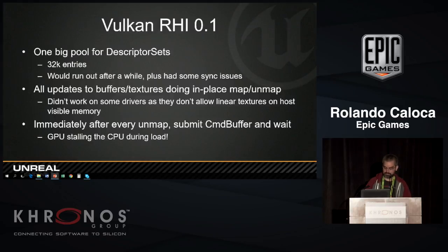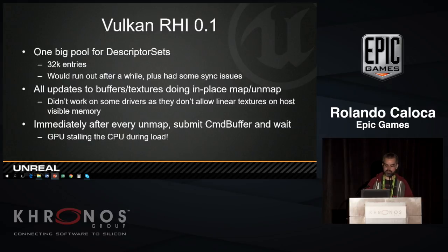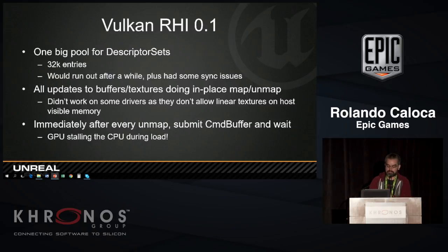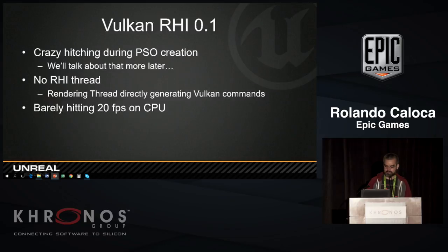Our very first version of Vulkan — our Hello World Vulkan — wasn't very great, but it was enough to start playing with the API. Originally we had one big pool for descriptor sets: just 32,000 entries, and after a while we'd run out. We had problems with synchronizations. Any updates to buffers and textures we were doing in-place with lock-on-lock or map-on-map. This didn't work on some drivers because some GPUs can't read linear textures and you can only map linear textures. We also had a correctness issue where every time after mapping we would submit the command buffer and wait for it, which stalled loading. And there was no RHI thread — we had just a rendering thread generating Vulkan commands directly. We were barely hitting 20 CPU frames per second.